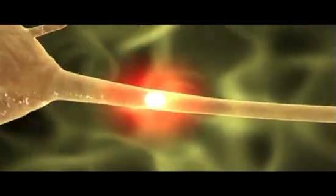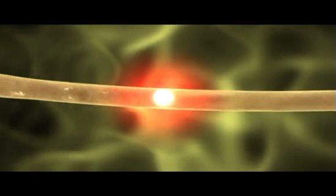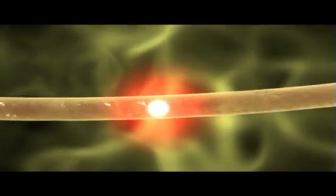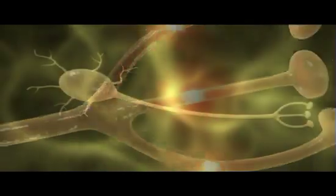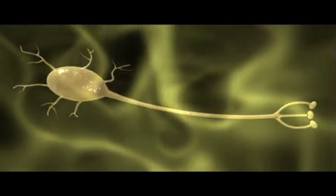During the action potential, the neuron suddenly becomes 20 to 50 millivolts positive inside. Action potentials last a few milliseconds before the cell restores its negative resting potential.